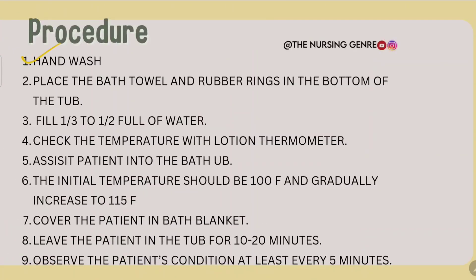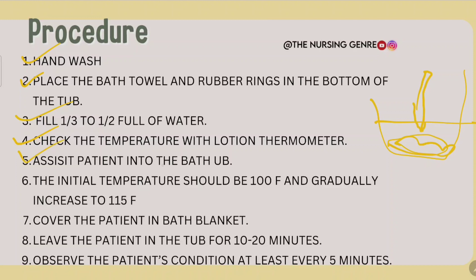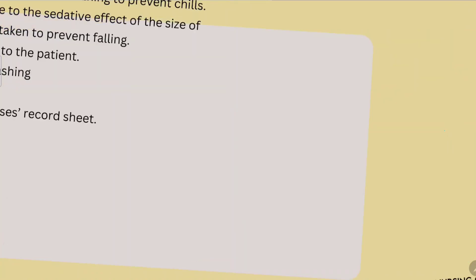Procedure: First, perform hand washing. Place a bath towel and rubber rings at the bottom of the tub. Fill the tub one-third to one-half full of water. Check the temperature with a lotion thermometer. Assist the patient into the bathtub. The initial temperature should be around 100 degrees Fahrenheit and gradually increase to 115 degrees. Cover the patient with a bath blanket. Leave the patient in the tub for 10 to 20 minutes and observe the patient's condition at least every 5 minutes.